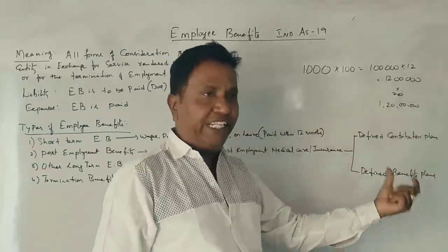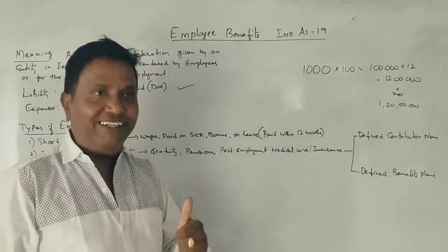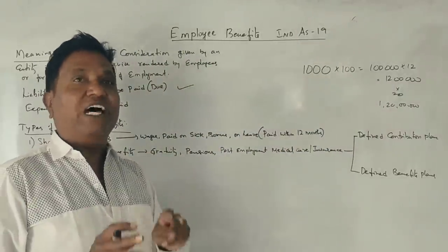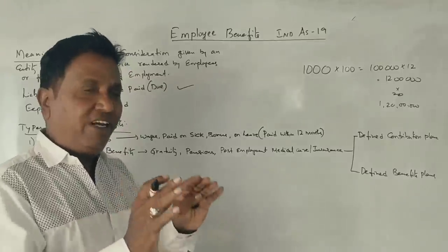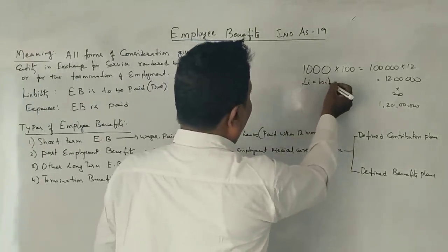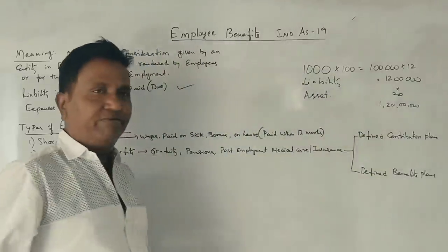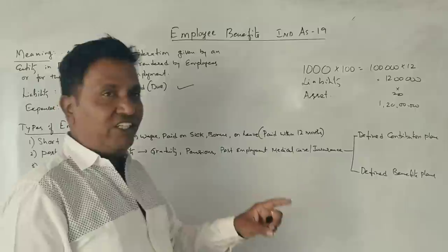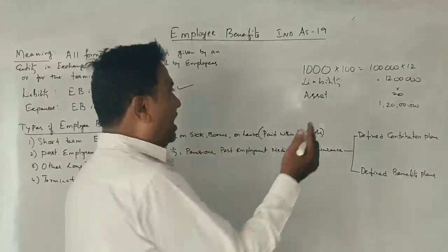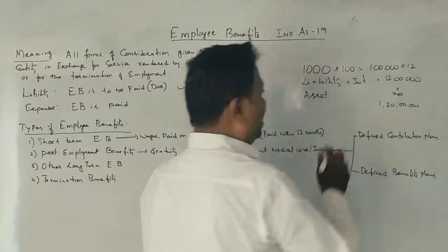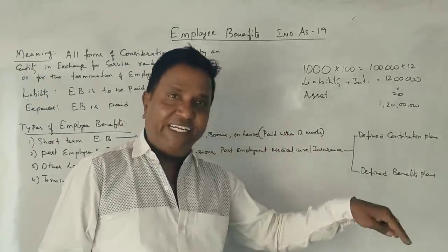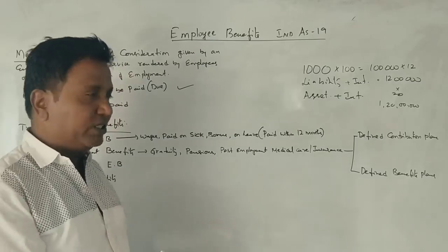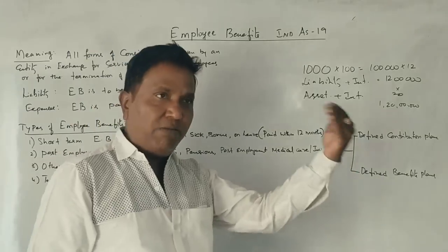If you have a liability, that liability is recorded. A company may have a bank or corresponding entry. The liability is on one side and the corresponding asset or expense on the other. Employees are paid interest-related benefits. We have to account for liability, asset, income, and expenses accordingly.